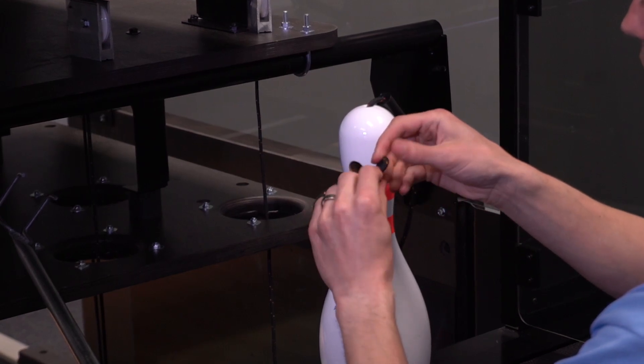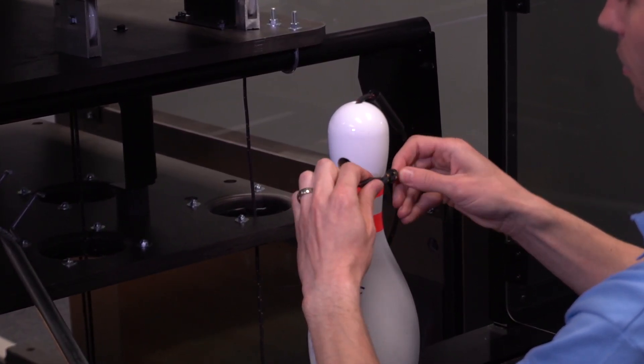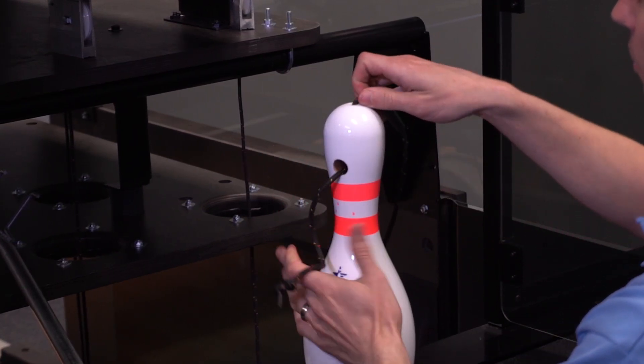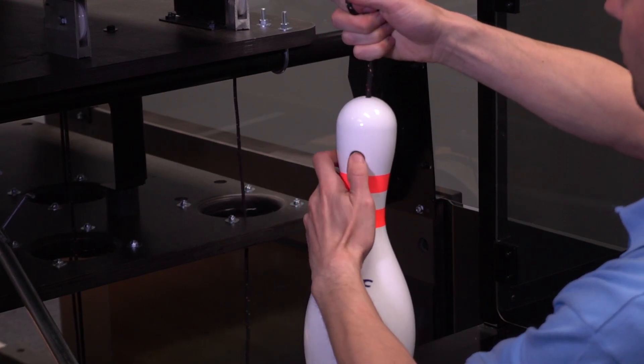Tie a figure 8 knot at the end of the string. Pull the string knot into the pin and pull the pin bushing down to the pin head.